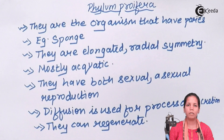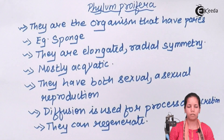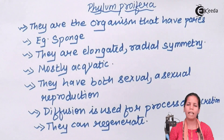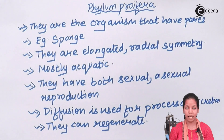Sponges could be one or two centimeters in size and they could have multiple colors. They are cylindrical in shape and mostly aquatic, though in some cases they can be terrestrial.